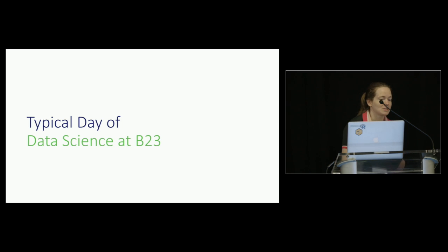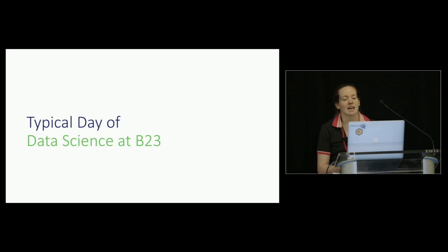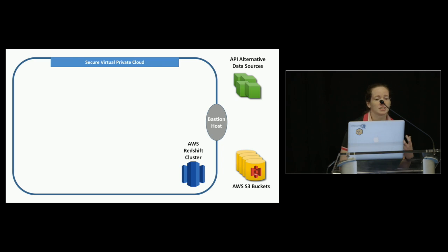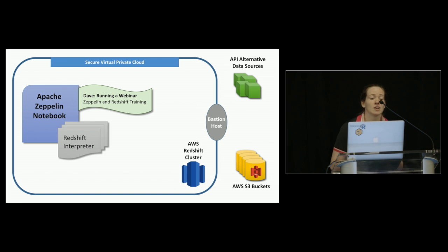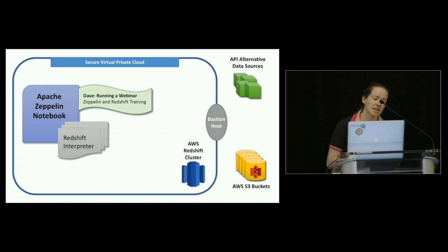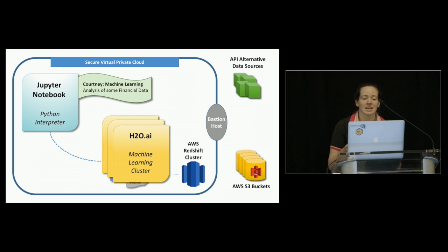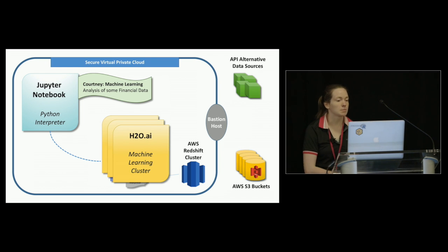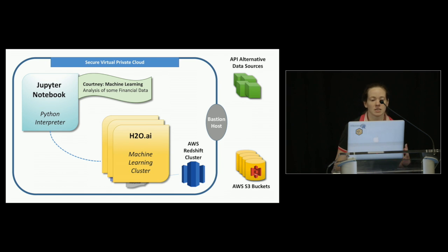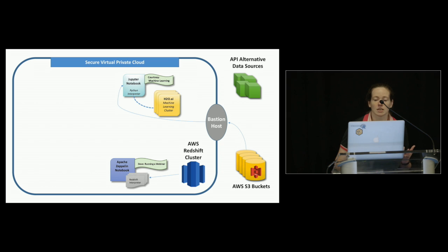I spent a lot of time talking about R specifically because this is an R conference, but we use quite a few different data science tools at B2-3. Here's a visual representation of our secure virtual private cloud and some of our data sources. My boss Dave is usually first in the office — on this typical day he's using Apache Zeppelin to run a webinar for Redshift training, with the Redshift interpreter enabled and hooked up to our Redshift cluster. My colleague Courtney, a machine learning expert, comes in next. She's doing analysis of financial data sets with a Jupyter notebook and Python interpreter, hooked up to an H2O cluster, using AWS S3 data.